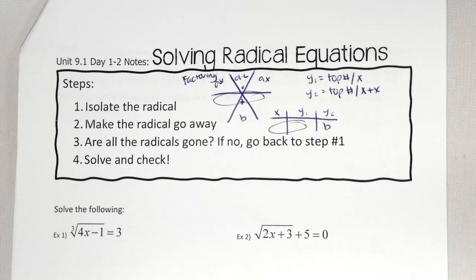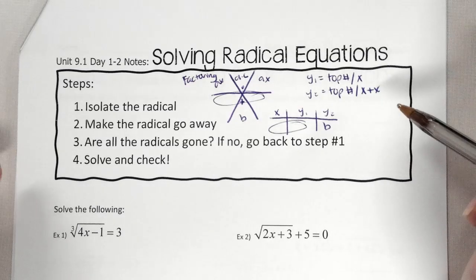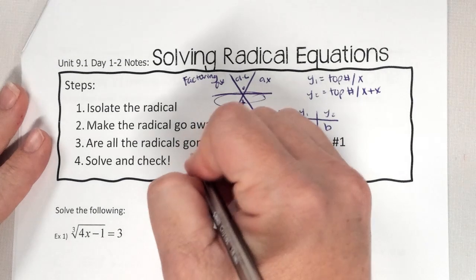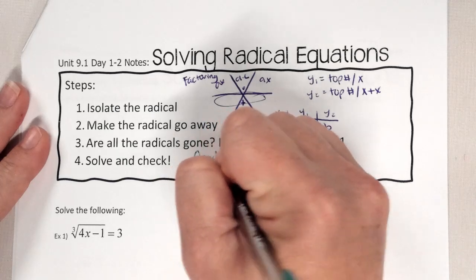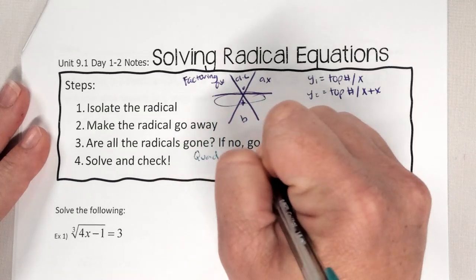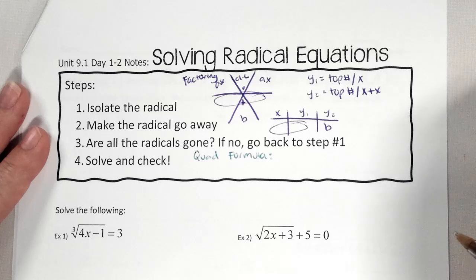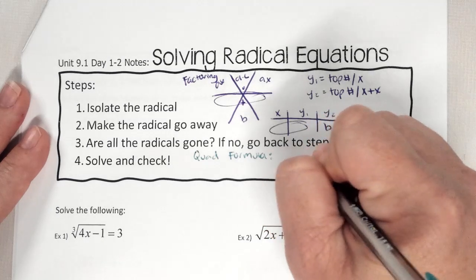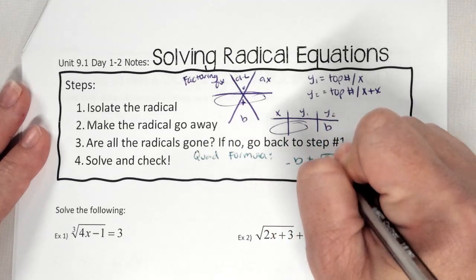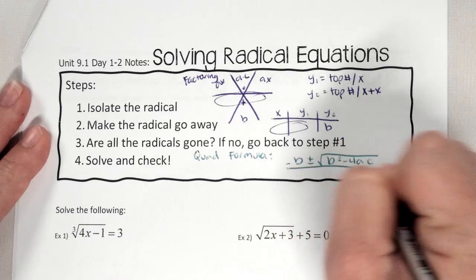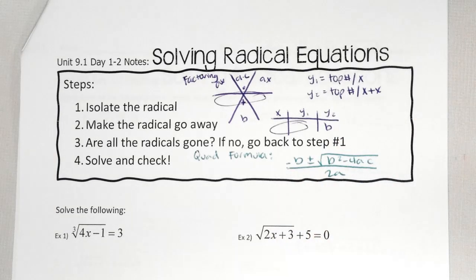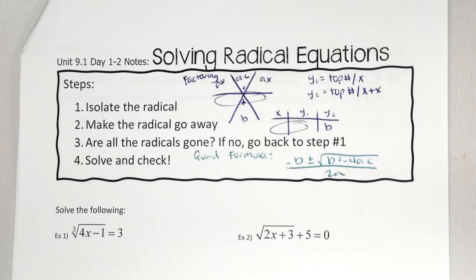If you hate factoring and you're terrible at it, we also just learned the quadratic formula. The quadratic formula works the exact same as solving by factoring: negative B plus or minus square root of B squared minus 4 times A times C, all over 2A. I'll show you both today so you can decide which method you want to use. You get to pick one — they both do the exact same thing.